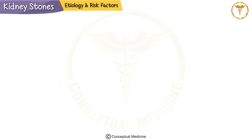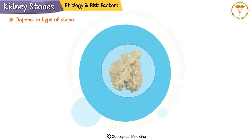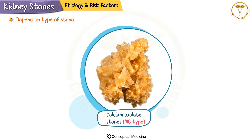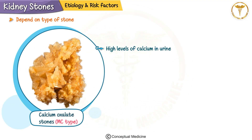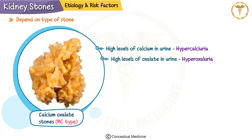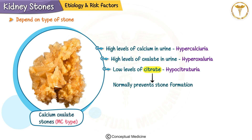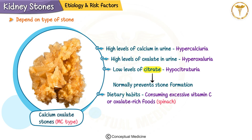Calcium oxalate stones, the most common type, are often due to high levels of calcium in the urine, a condition called hypercalciuria. Other contributing factors include hyperoxaluria, meaning too much oxalate in the urine, and hypocitraturia, which refers to low levels of citrate — a substance that normally prevents stone formation.